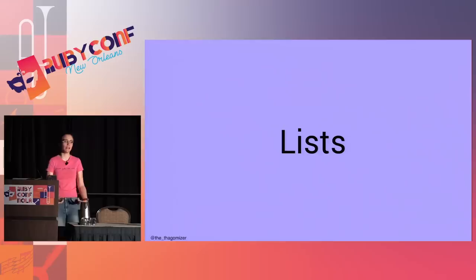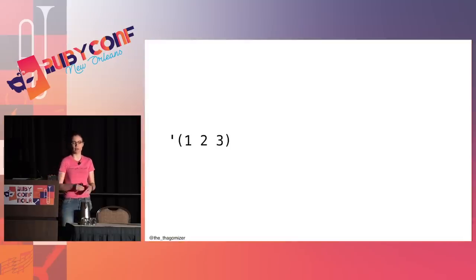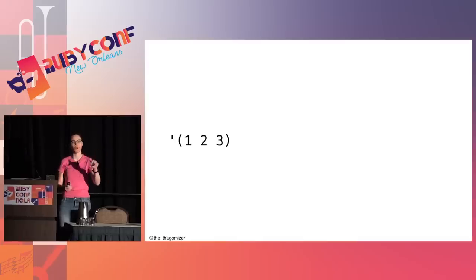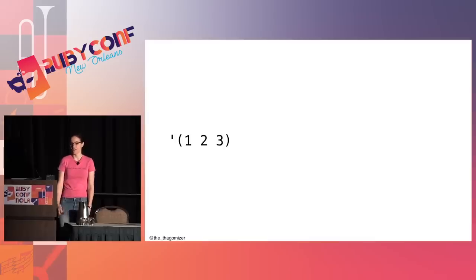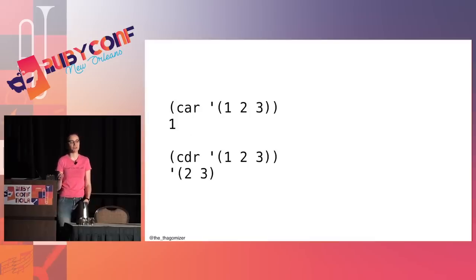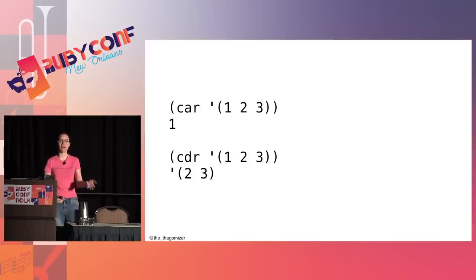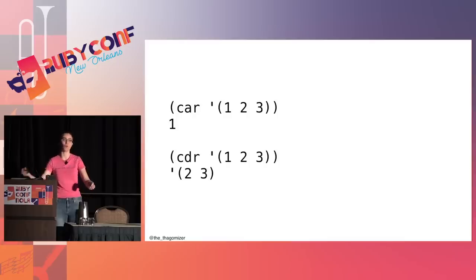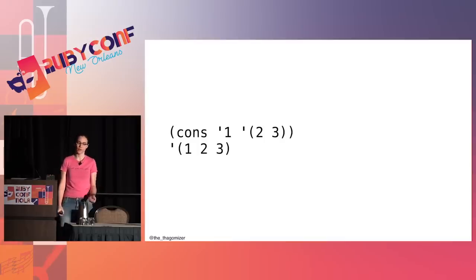The other thing you need to know is lists. In Racket you represent a list as items separated by spaces inside parentheses with a tick in front — the tick distinguishes it from a function call. You access the first element using 'car' and the rest of the list using 'cdr'. You can also say 'head' and 'tail.' And you make lists using 'cons' — consing the item 1 onto the list (2 3) gives you the list (1 2 3).